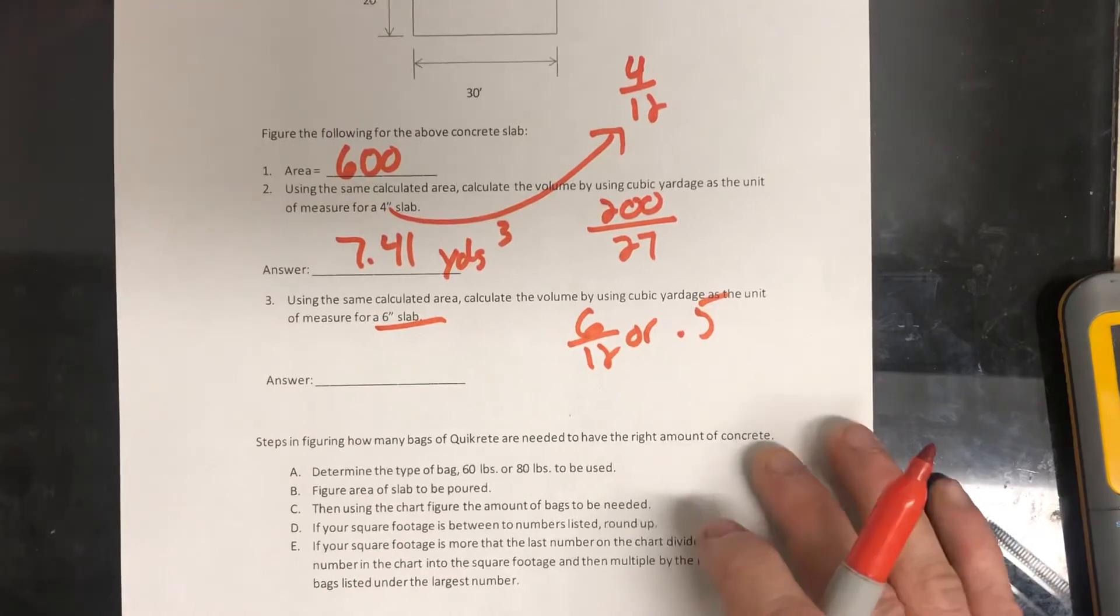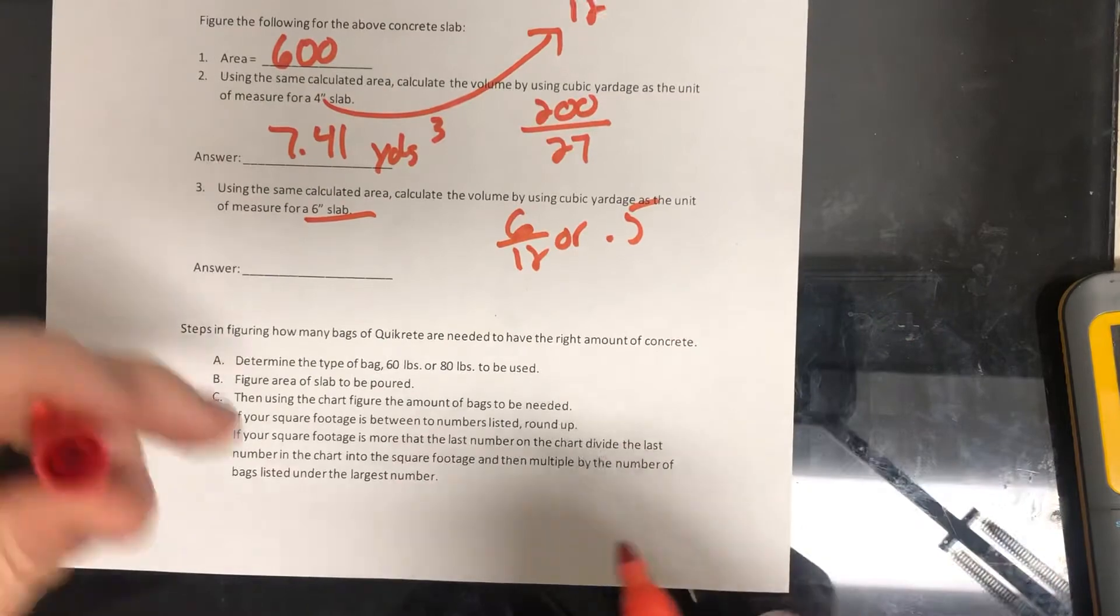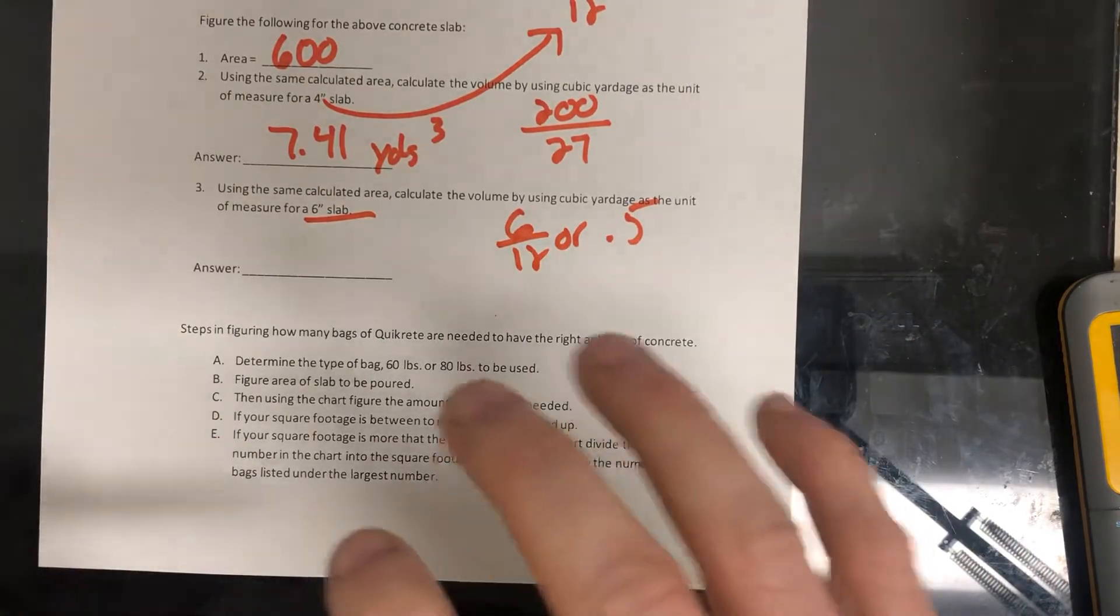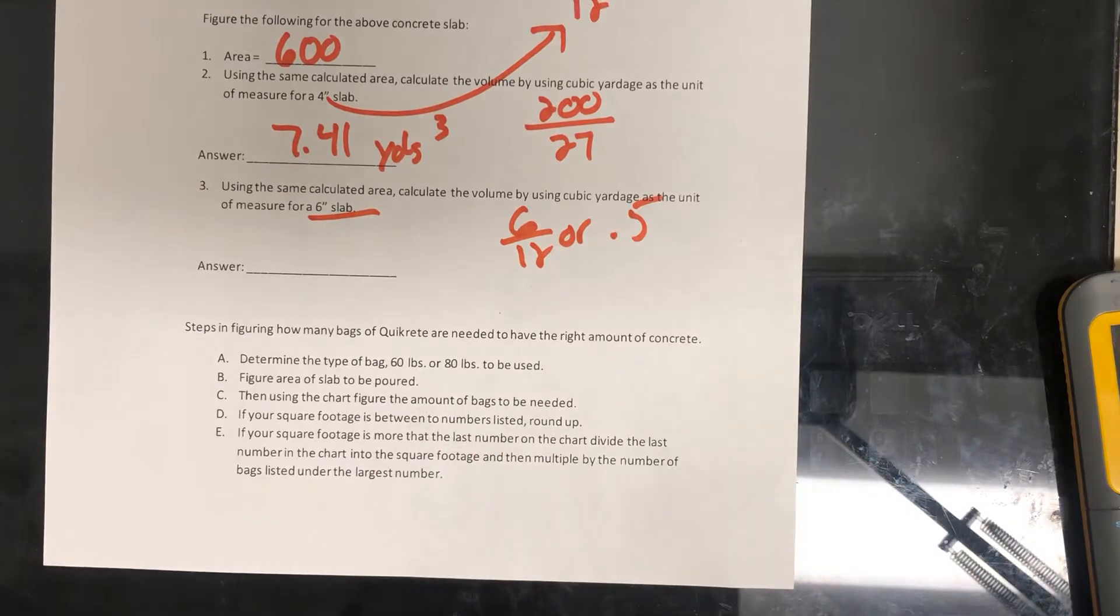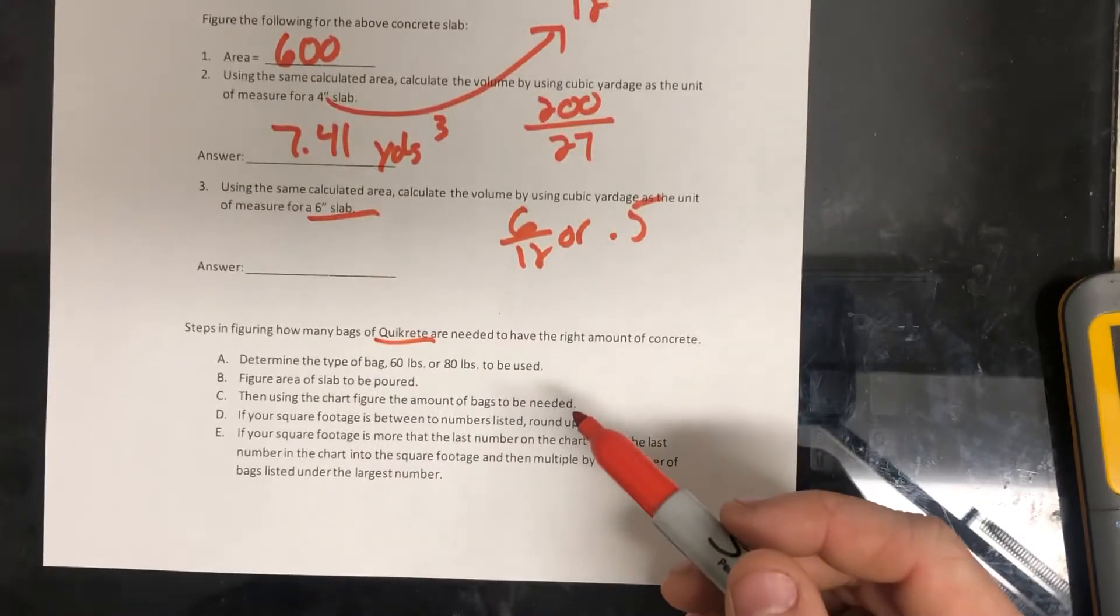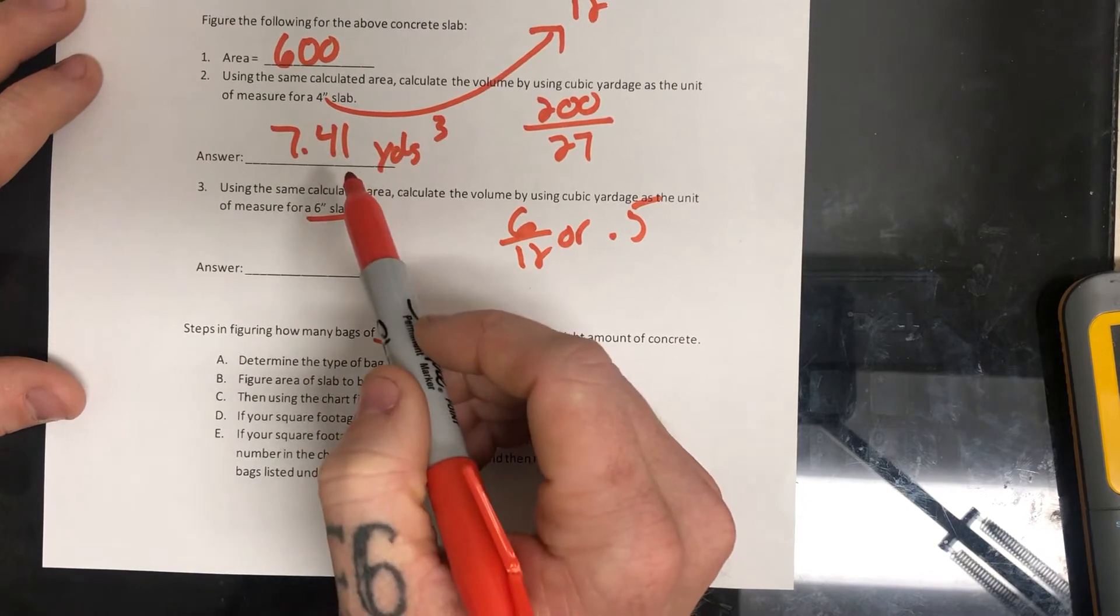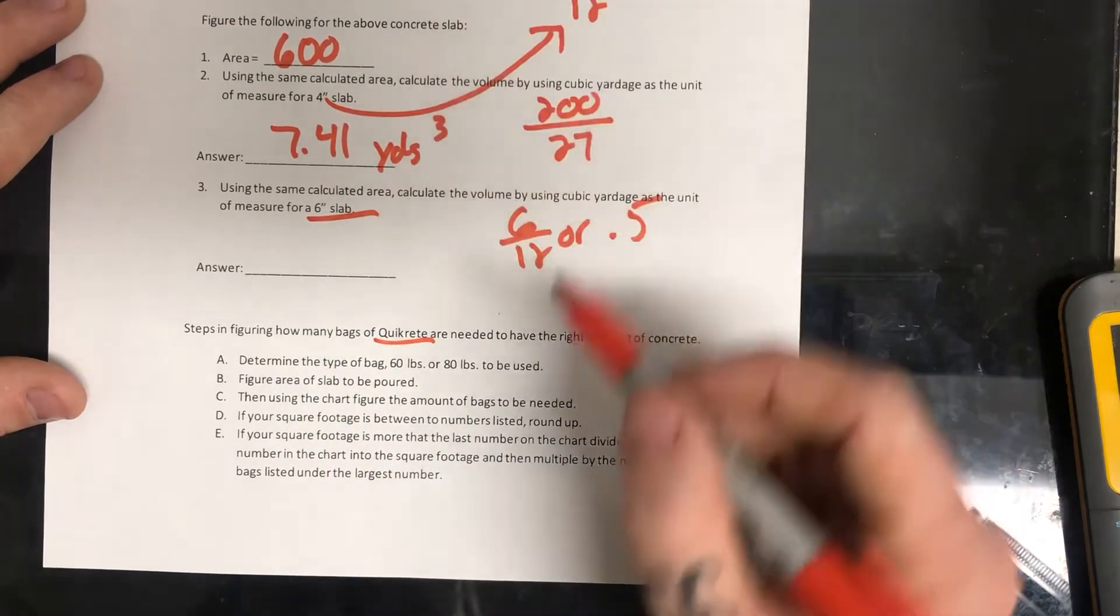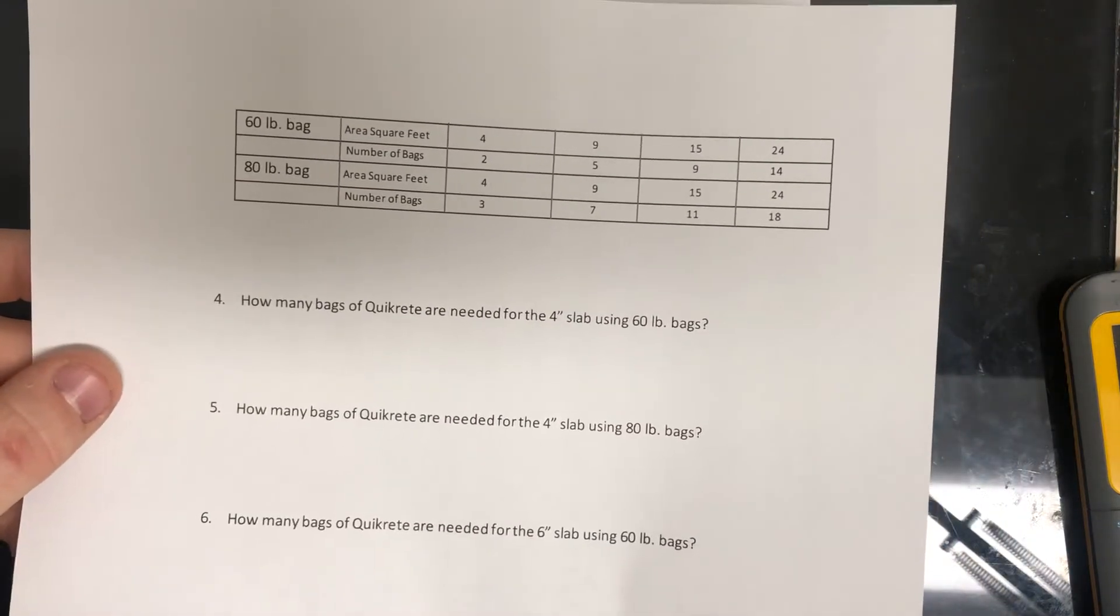But we're going to come down here. And actually, I don't necessarily agree with this math on this particular worksheet. But I'm going to show you guys how to do it according to this worksheet. And then tomorrow, we'll go over some things that I think might be wrong on this. So anyway, now we got to figure out how much quick creed or how much bags of concrete we need. So we know that the area is 600 and it's 7.41 cubic yards for this particular slab. So we're going to go to this chart that they gave us on the next page and use this chart to estimate how many bags of concrete we need.